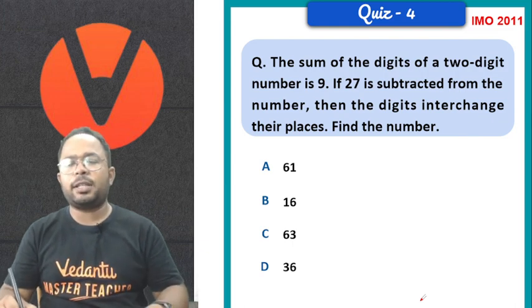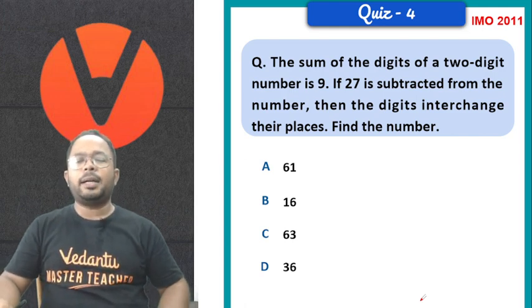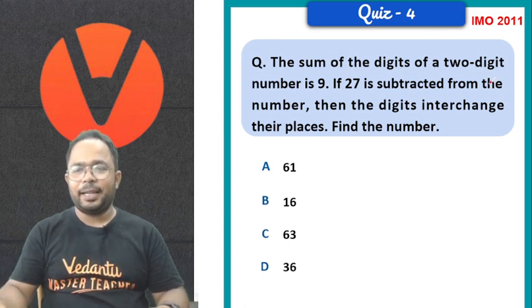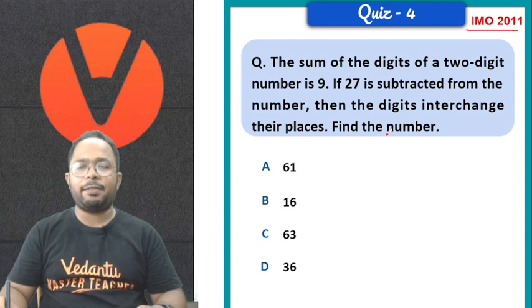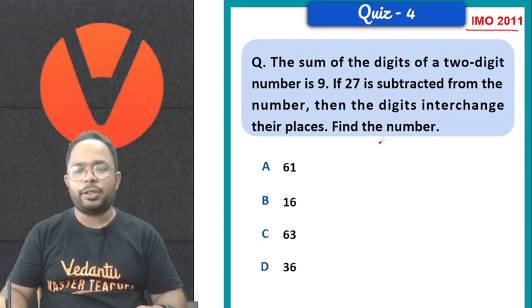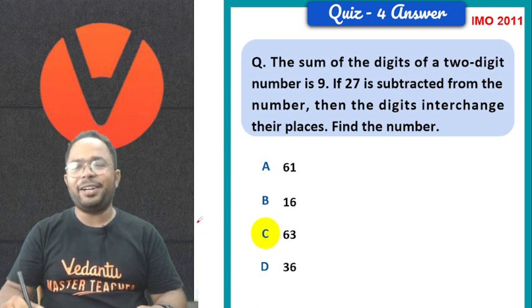Let's move on to another one. The sum of the digits of a 2 digit number is 9. If 27 is subtracted from the number, then the digits interchange their places. Find the number. It is again an IMO question of 2011.